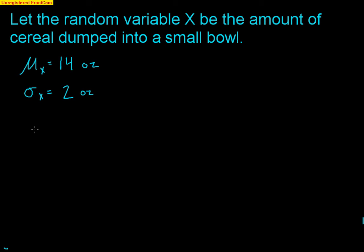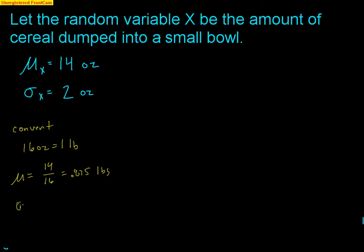The first problem: converting to pounds. There are 16 ounces in one pound, so to convert from ounces to pounds you divide by 16. The mean becomes 14 divided by 16, which is 0.875 pounds. Standard deviation is also affected by division, so 2 divided by 16 gives 0.125 pounds. Pretty easy.